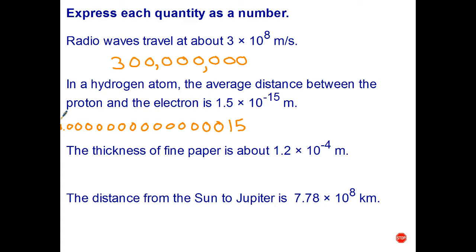Thickness of fine paper is about 1.2 times 10 to the negative 4 meters. Well, again, write the 1.2, move the decimal point back four places: one, two, three, four. The other way you could have done it is write 1.2 and then put three zeros in front of it, because it's always one less than whatever that digit is.